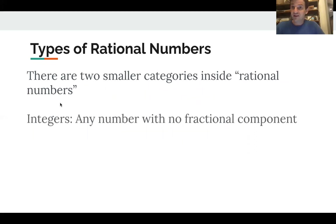The first one is integers. You already have this vocab, right? Any number that can be written with no fractional component. So 2, 7, negative 3, 0, negative 17, all those are integers.